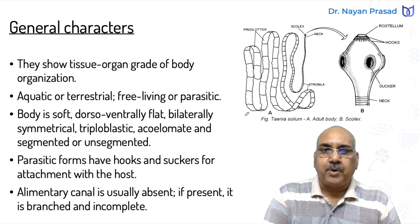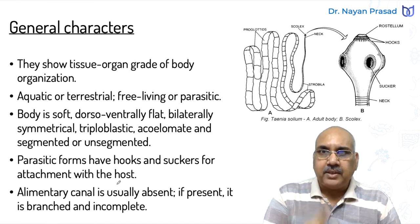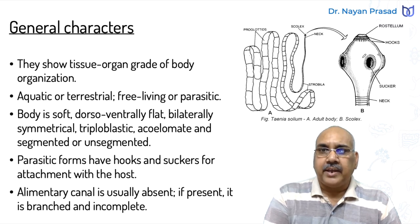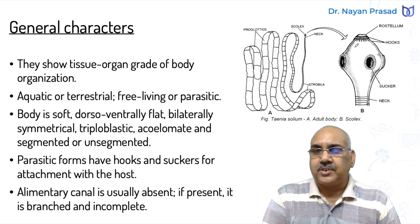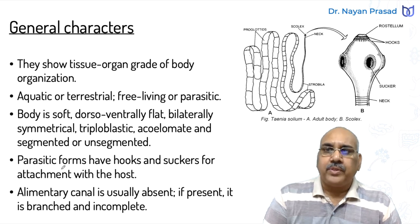The parasitic forms have hooks and suckers for attachment with the host. You may see in the diagram the tapeworm having a small anterior end called the head or scolex, and in an enlarged view we can see the head with several hooks — pointed structures for attachment — and suckers. Hooks and suckers are often found in parasitic forms and help in attachment with the host tissue.